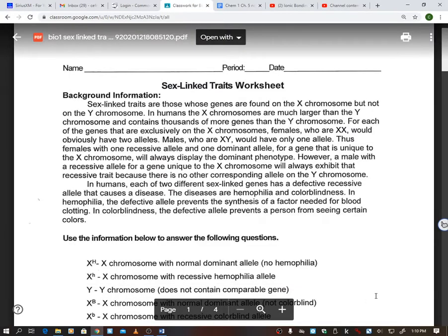Okay, we are going to look at sex-linked traits and how to do Punnett squares when we're dealing with a gene that's on the X or Y chromosome. Because we do have genes, not only does it make us male and female genetically, but they also have traits on there. So we're going to look at how that works. Sex-linked traits are those whose genes are found on the X chromosome but not on the Y chromosome.